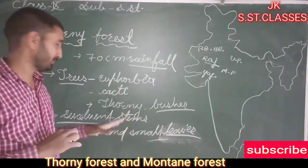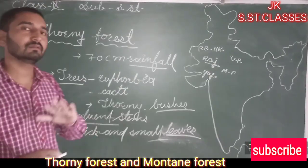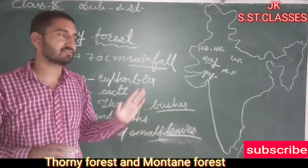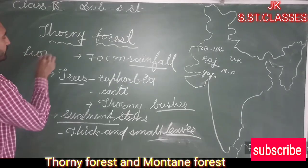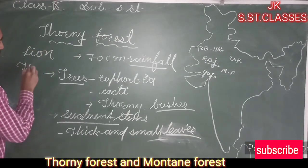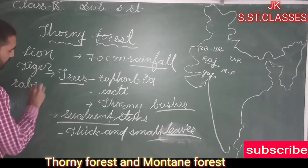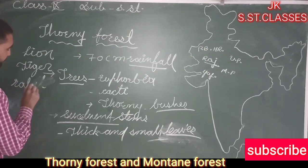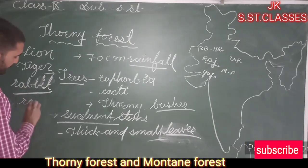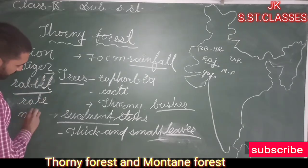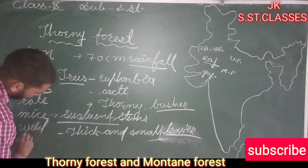The major animals present in the thorny forests and scrubs category are lion, tiger, rabbit, wild boar, mice, and wild ass.